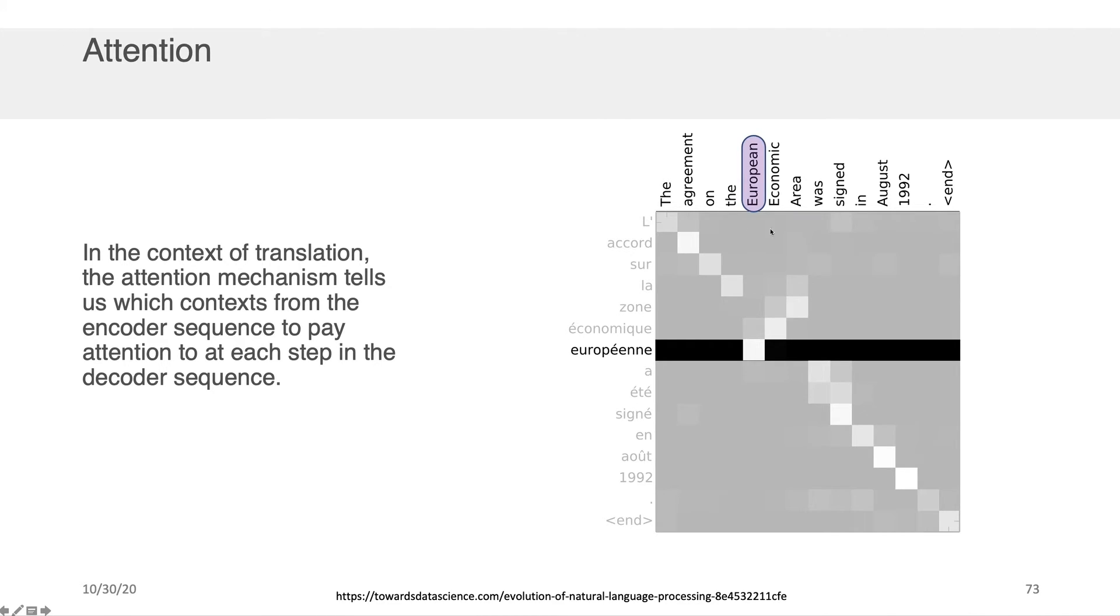This matrix is actually representing something about the attention of a model that's trained to do this translation. For example, if we're on this part of the decode sequence, we're trying to figure out what's the word, this is a question mark, let's say. We don't know that this is European yet. And we're trying to figure out what in the input context should we pay attention to. Well, the attention model would tell us you want to be looking at the word European, and this should be very informative for what word you put here.